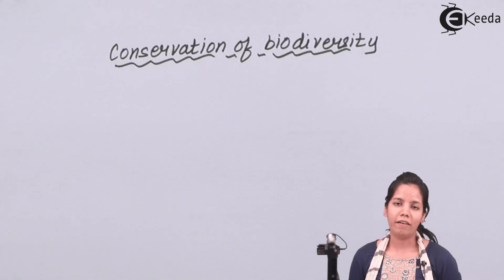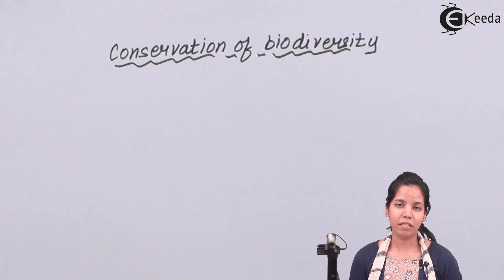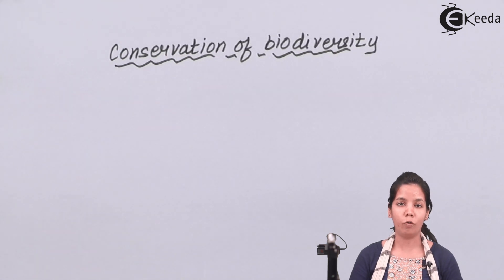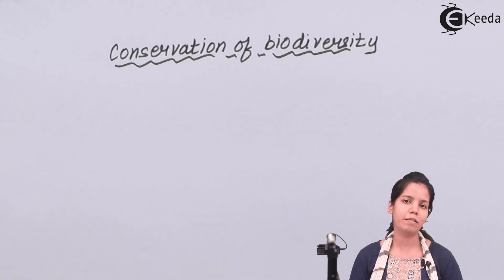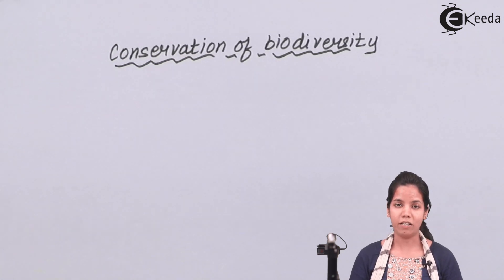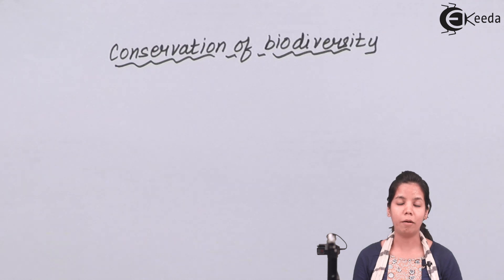Conservation of biodiversity in simple terms means to conserve the flora and fauna — that is plants, animals, birds, reptiles — everything present on this biosphere, for the present generations and the future generations to come, so that they can use it.